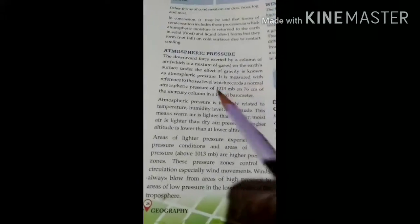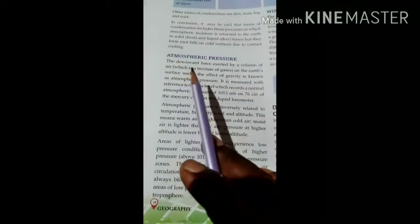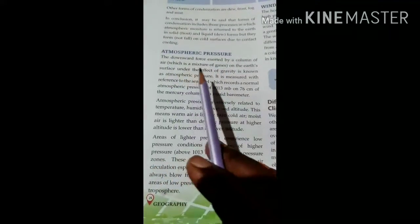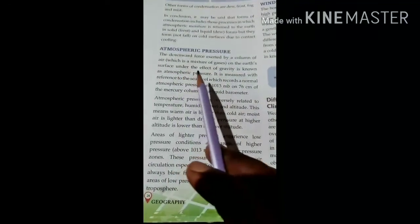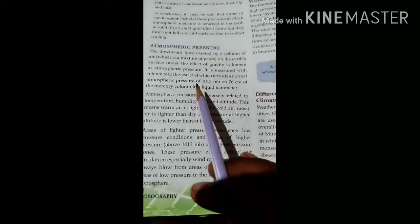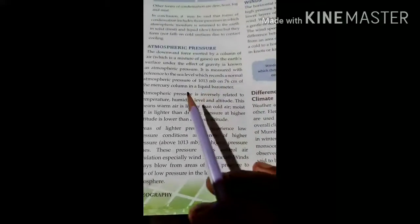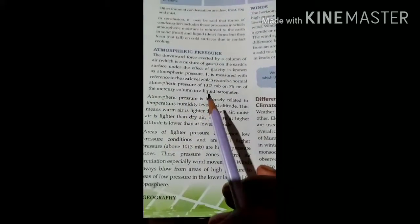Now let us talk about atmospheric pressure. The downward force exerted by a column of air on the earth's surface under the effect of gravity is known as atmospheric pressure. It is measured with reference to sea level, which records normal atmospheric pressure of 1013 mb or 76 centimeters of mercury column in the liquid barometer.